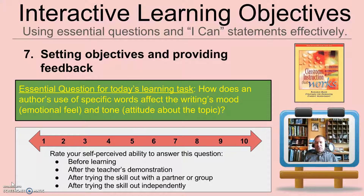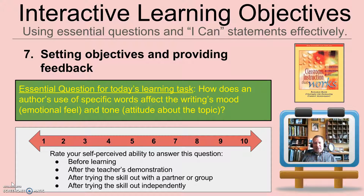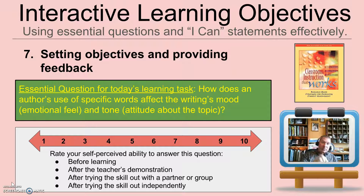They have to interact with the essential question, and one of my favorite tools for that is laminated cards with 1 through 10 on them, and we put colored paper clips on them. Before we learn, I show them an essential question and they rate how well they think they could answer it right now. Usually their first rating is 1, 2, or 3. After I demonstrate, sometimes we revisit and see if the paper clip moves. If it does, I ask them why. After they try it with a partner or in a group, I ask again. These are all signposts I use to give feedback and have discussions as the paper clip moves forward — or sometimes back.